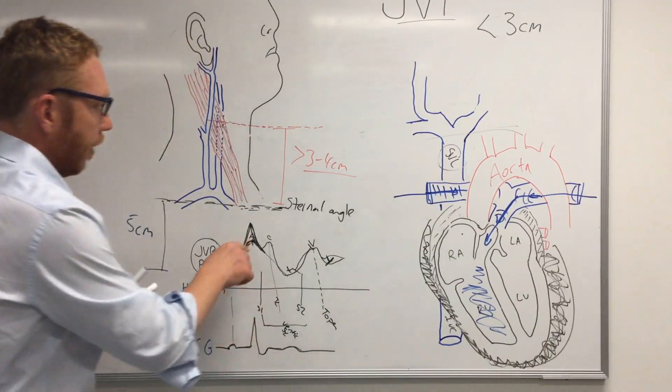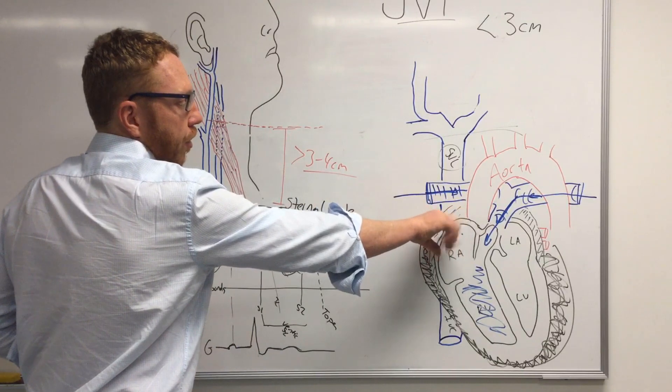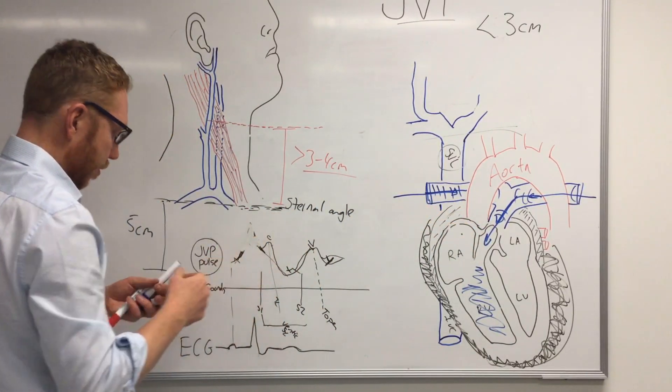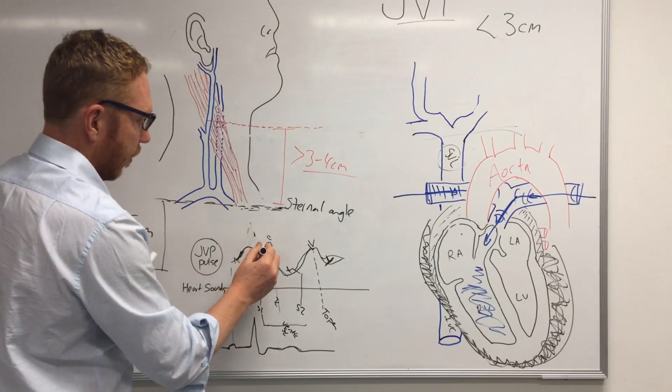Another example of what might happen, if you've got atrial fibrillation, so this is not contracting, it's just fibrillating, you're not going to have a very big A wave at all. So you might see a flattened A wave there.